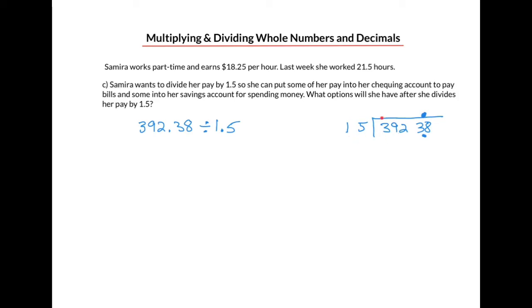We start with 15 into 39, and that goes in there twice. And then 15 times 2 is 30. Subtracting, we end up with 9 remainder. Then we bring down the 2. And then we find out how many times does 15 go into 92. And that will go in there six times. Six times 15 is 90, with a remainder of 2.